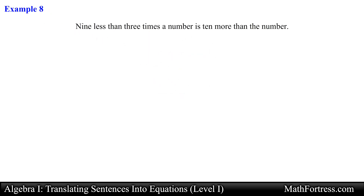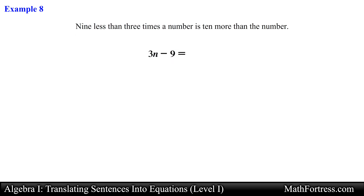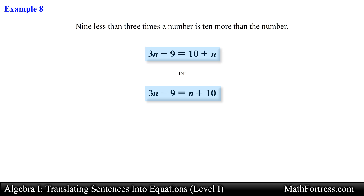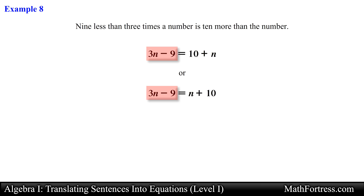Final example: '9 less than 3 times a number is 10 more than the number.' Here we have multiple operations on both sides. On the left we have multiplication and subtraction — specifically 3n minus 9 — followed by the equal sign, then a sum of 10 and n on the right. The final expression is 3n minus 9 equals 10 plus n, or 3n minus 9 equals n plus 10. Either form is acceptable, because the order of addition doesn't matter, but the order of subtraction does. In the next video we will continue translating sentences into equations, especially those requiring formulas.